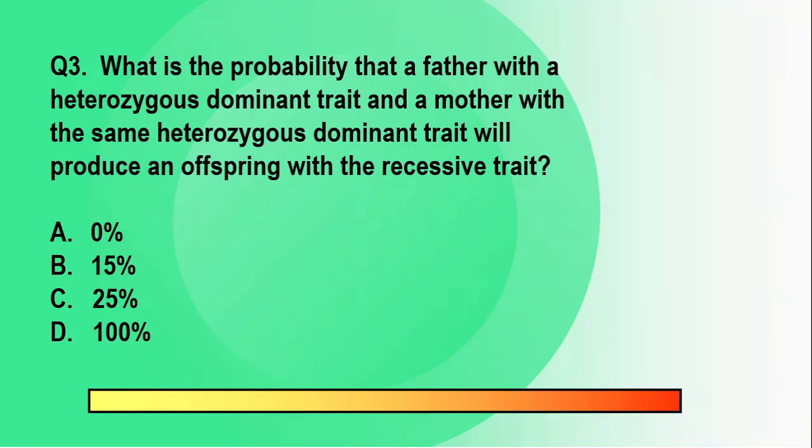The correct answer is letter C, twenty-five percent. When both the father and mother are heterozygous, both parents will possess the same genotype consisting of one dominant allele, which is your big letter T, and one recessive allele, the small letter T. Doing the Punnett square, we see three ways in which an offspring can exhibit a dominant trait and there is one way for a recessive trait. This means that there is a 25 percent chance that an offspring will have the recessive trait.